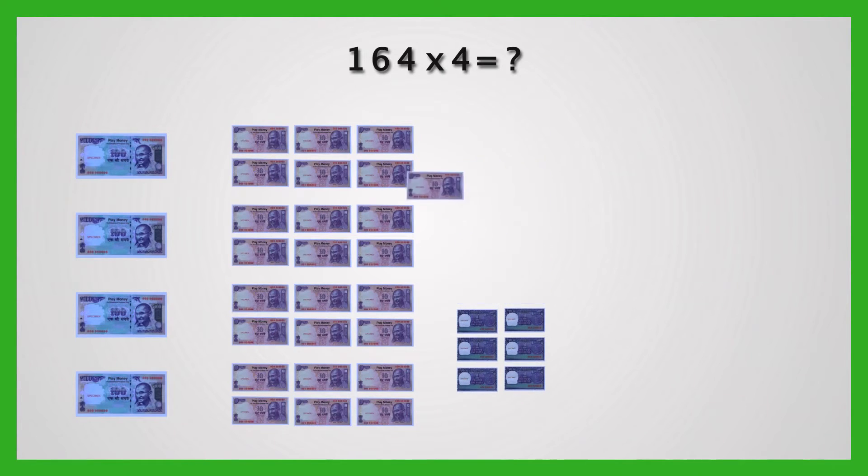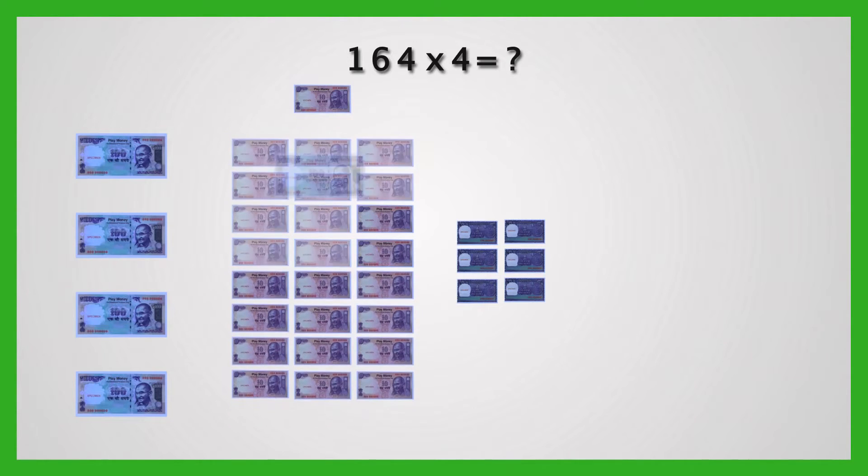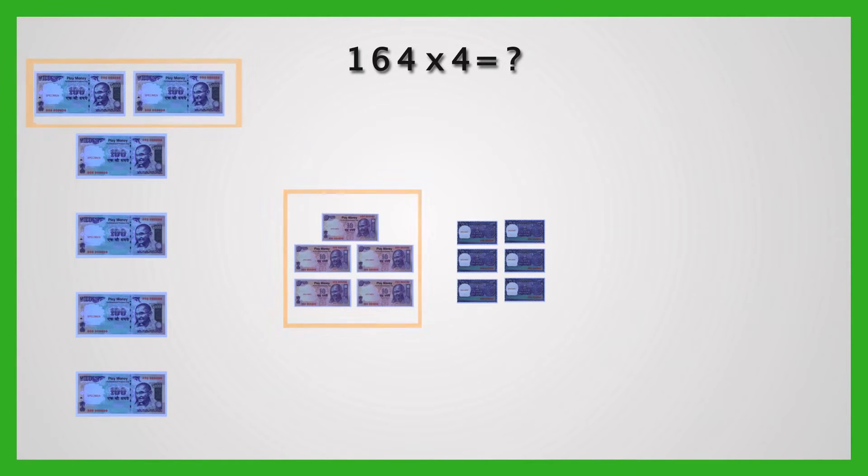Regroup 16 ones as one 10 and six ones. Repeat the same for the tens. Regroup the tens. Carry over two groups of hundreds and we have five tens remaining.